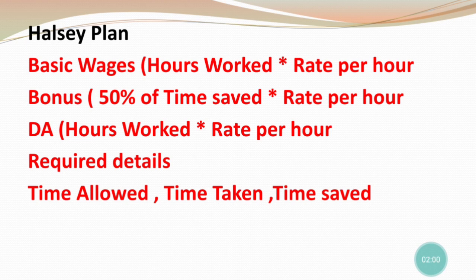Let us start with the formula. I have divided the formula into 3 parts. The first is the Halsey plan formula. For basic wages, you take hours worked and multiply by rate per hour. The amount of hours the worker has worked, multiplied by the rate per hour — the rate per hour will be given in the question.